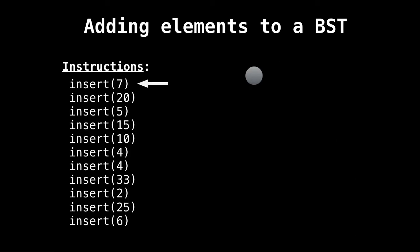Let's look at some animation now. So on the left, I have a bunch of insert instructions. So we have all these values we want to insert into our binary search tree. And currently, the binary search tree is empty. So first, we want to insert seven. So seven becomes the root of the tree because it's the first node.